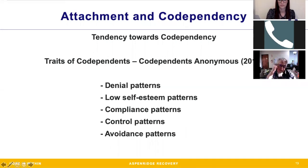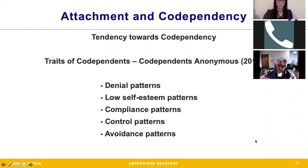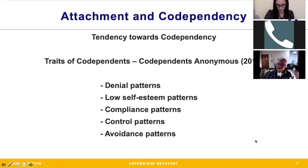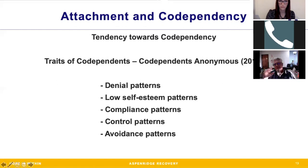We all have a tendency towards codependency because we all would like to help. In fact, one of the main tenets of 12-step programs — especially AA and NA — is the idea of service work, this sense of being selfless instead of selfish. With codependence it's a little different because they are over-selfless. In 2016 the CODA book — Codependents Anonymous — presented five different traits of people. One is denial patterns. In my experience, it's much harder to encourage a family member of an addict or alcoholic to go to Al-Anon or Codependents Anonymous than it is to get an addict to go to AA or NA. There's a high level of denial.